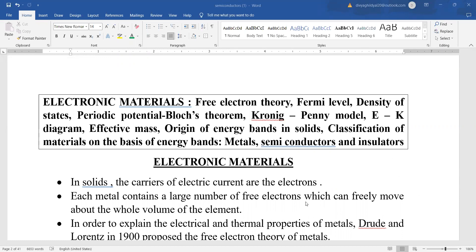We will be discussing under electronic materials: free electron theory, Fermi level, density of states, periodic potential, the Bloch's theorem and the Kronig-Penney model, energy and K-diagram, effective mass, origin of energy bands in solids, and classification of the materials on the basis of energy bands - that is the metals, semiconductors, and insulators. Let us begin.